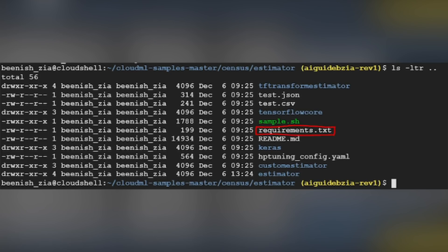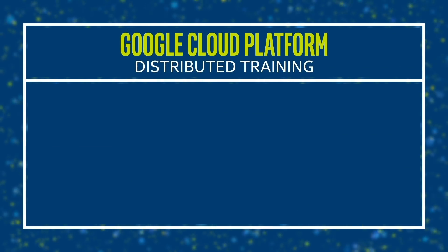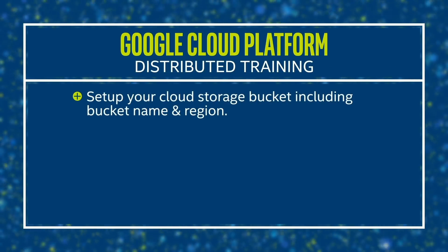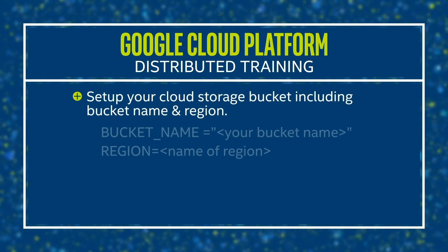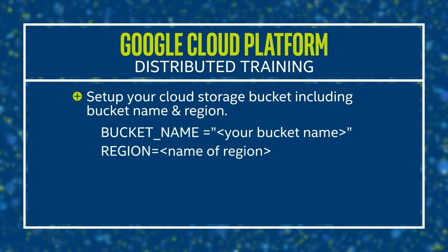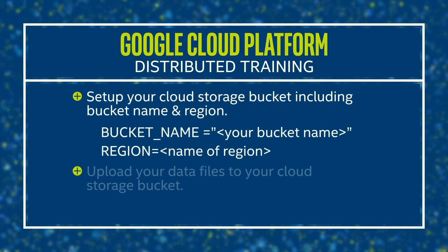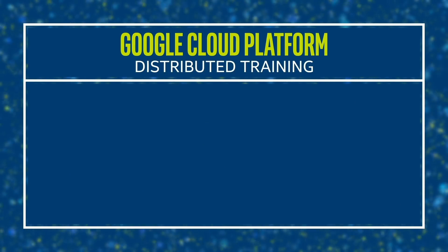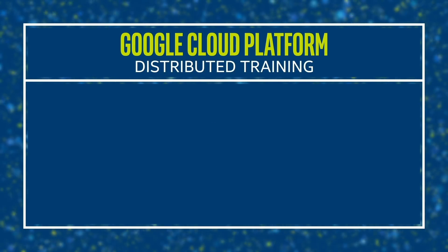Then you will verify the Google Cloud SDK configuration, followed by downloading the code for the example run. Google hosts a public cloud storage bucket where you can get relevant training data. Once you have your training data, install dependencies. For running distributed training on GCP, you will need to set up your cloud storage bucket, including bucket name and region, followed by uploading your data files to your cloud storage bucket.